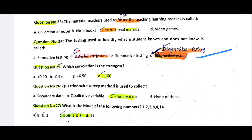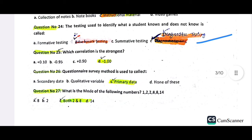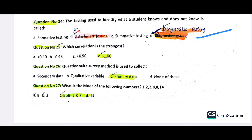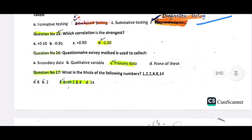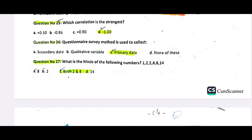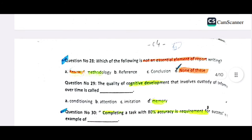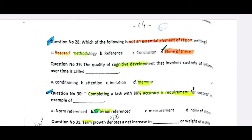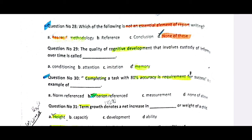Option number D is correct. The questionnaire survey method is used to collect primary data. What is the mode of the following numbers? — 2 and 8 are repeated, so both 2 and 8 are the mode. Which of the following is not an essential element of report writing? — methodologies, references, and conclusions are included, so option number D is correct. The quality of cognitive development that involves retention of information over time is called memory. Completing a task with 80% accuracy required for success — this is your criterion-referenced assessment.